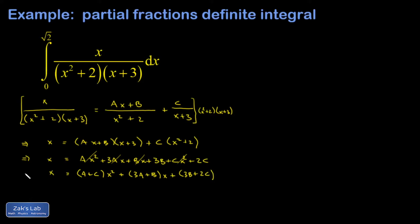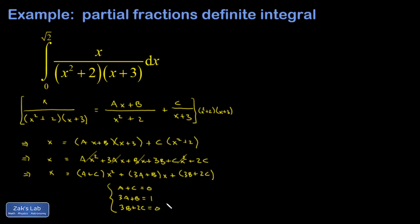My constant terms are 3B + 2C. On the left-hand side I've got just x, so for this to be true for all x, the coefficient of each power of x must be the same on both sides. The coefficient of x² on the left is 0, so A + C = 0. The coefficient of x is 3A + B on the right and 1 on the left, so 3A + B = 1. The constant on the left is 0, so 3B + 2C = 0.